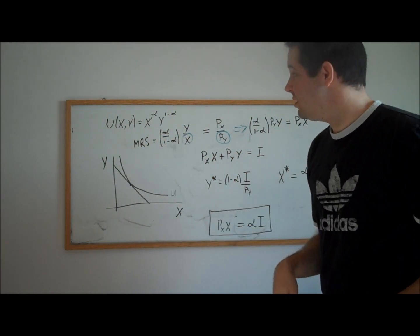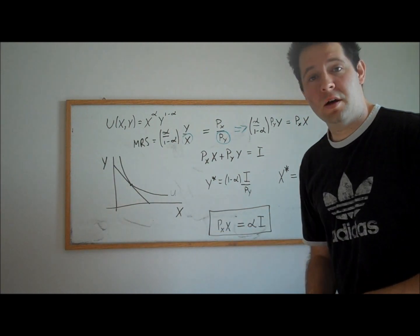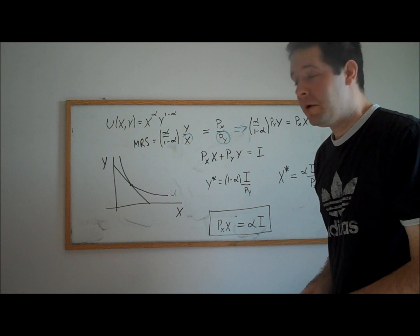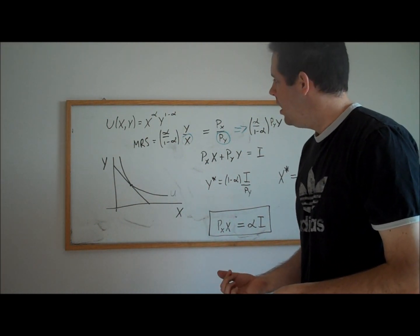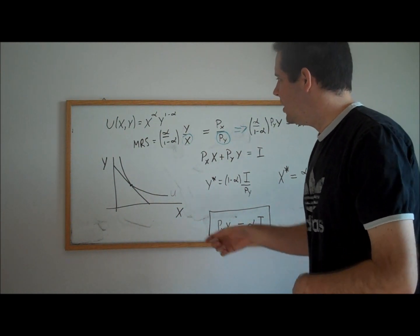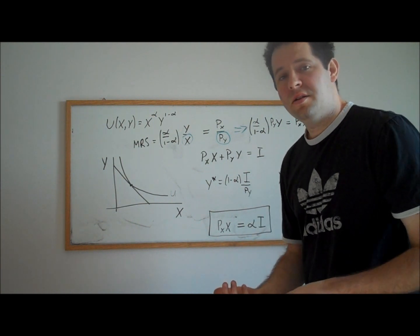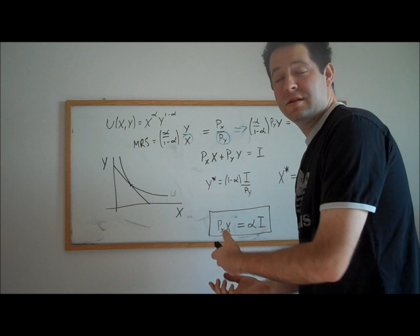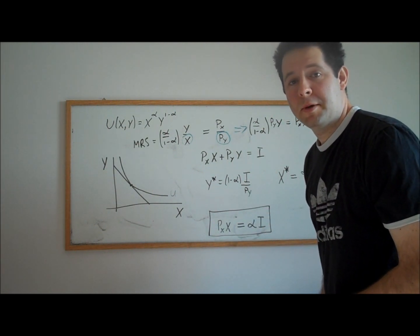For good y this holds as well. The exponent on y tells you the share of income the consumer devotes to y at the consumer optimum. This fact — that expenditure shares come directly out of the utility function's exponents — makes Cobb-Douglas utility functions easy and convenient, and that is the big reason why they appear so frequently in microeconomics.